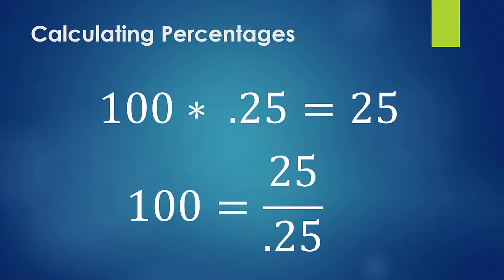For example, you might be creating a financial report and dealing with a segment of revenues. Say the segment you're dealing with is $25,000 of revenue and you know it's 25% of the total revenue. You can quickly figure out the total revenue by taking 25,000 divided by 25%, which gives you $100,000 — that's your total revenue. When you're dealing with percentages, you can go backwards and forwards through this equation.